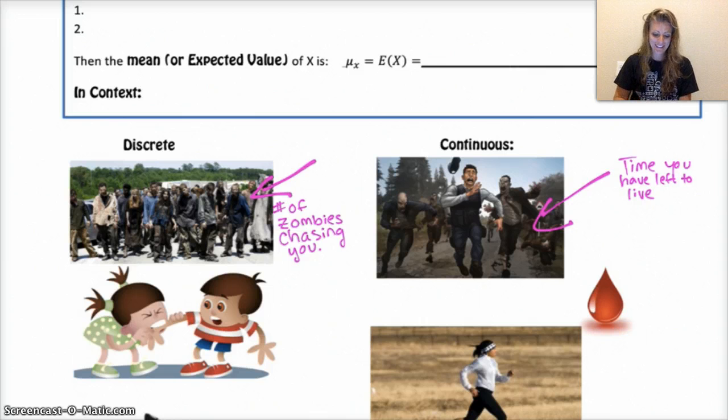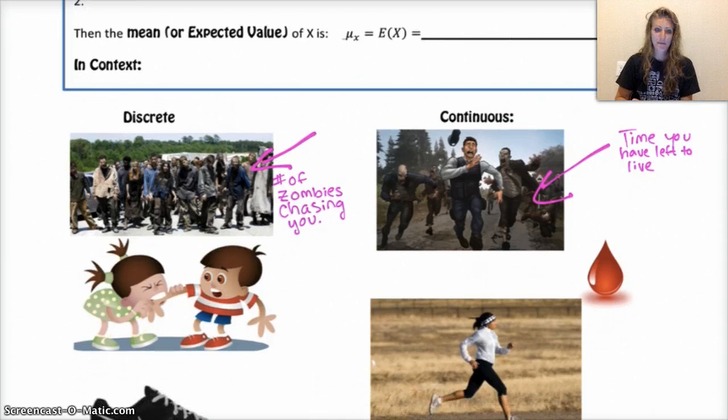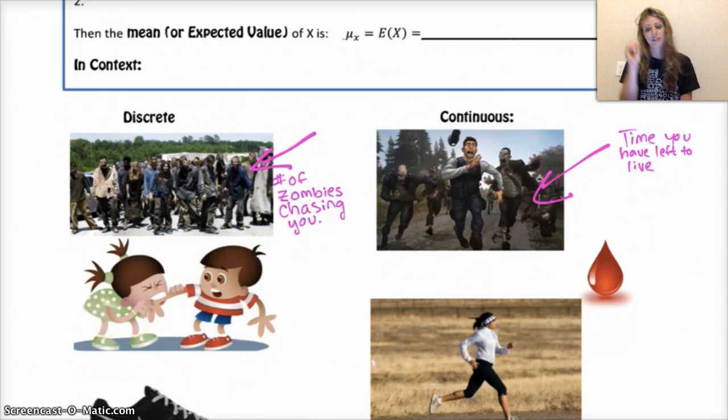Another discrete variable might be the number of bites you have from a zombie, because you can count them. You have one bite, two bites, three bites, four bites, zero bites. But you can't have like half a bite, because once you're bitten, you're bitten. And then you're dead. So it doesn't matter. Counts as a bite.